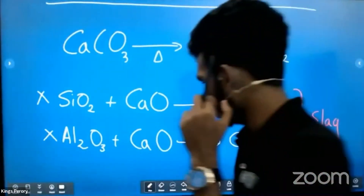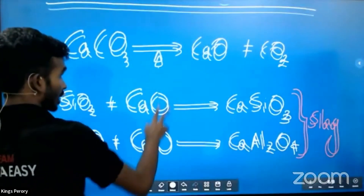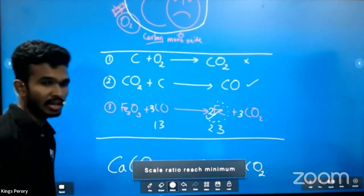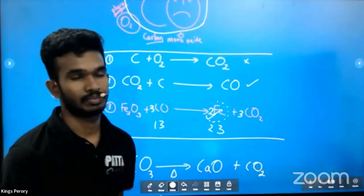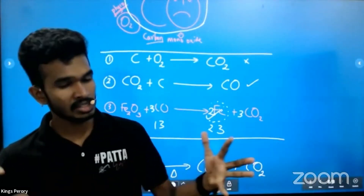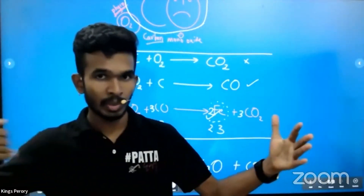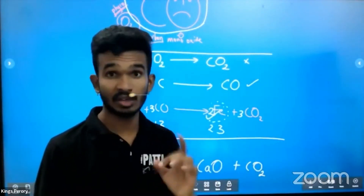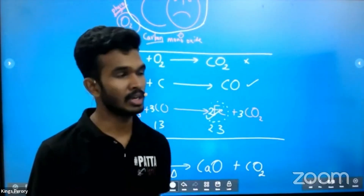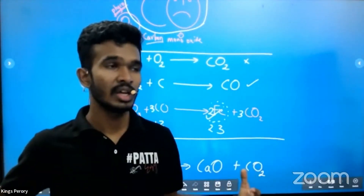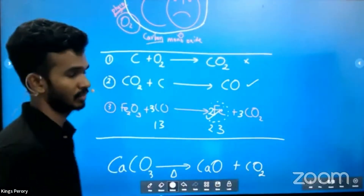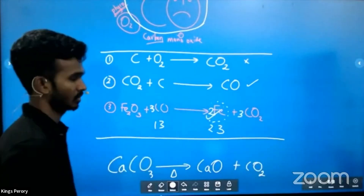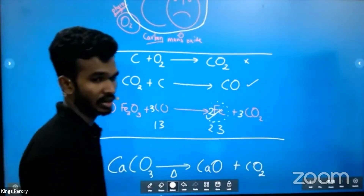There's a question: what does reduction mean? Reduction means removing oxygen. Oxidation means adding oxygen. This is a simplified definition — you'll go deeper in electrochemistry later. Carbon monoxide is removing oxygen from hematite, therefore it is a reduction reaction.